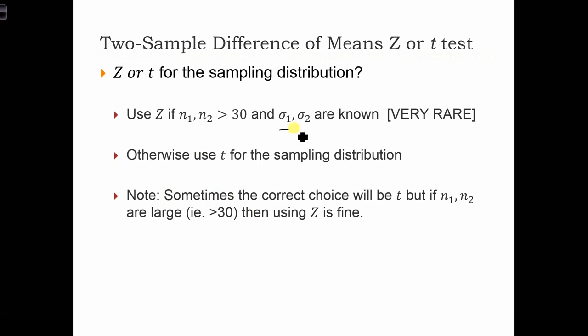The second condition for the two sigmas to be known is very rare. But of course, so long as n1 and n2 are greater than 30, even though sigma1 and sigma2 might be unknown, we can still use the z score because technically speaking, there's no real difference between a t score with 30 degrees of freedom and a z score.